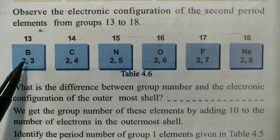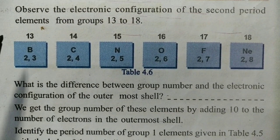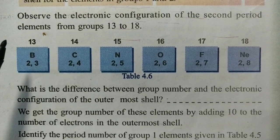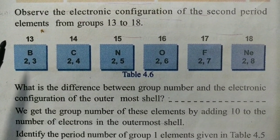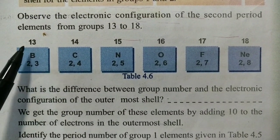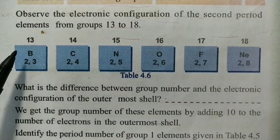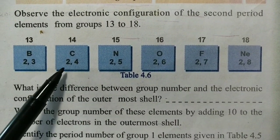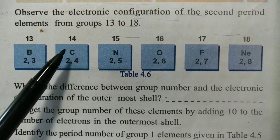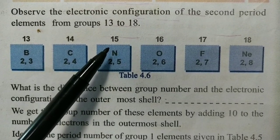The group number is 13. We take group number 1 and 2 separately. For group 13 onwards: if there are 4 electrons in the outermost shell, then the group number is 14. If there are 5 electrons in the outermost shell, then the group number is 15.